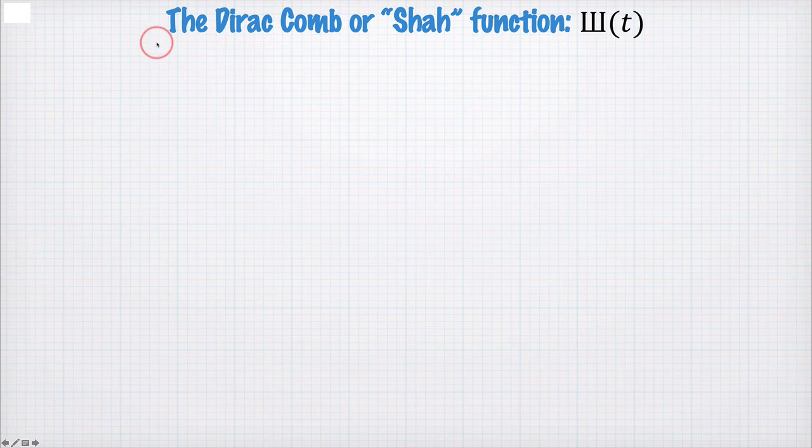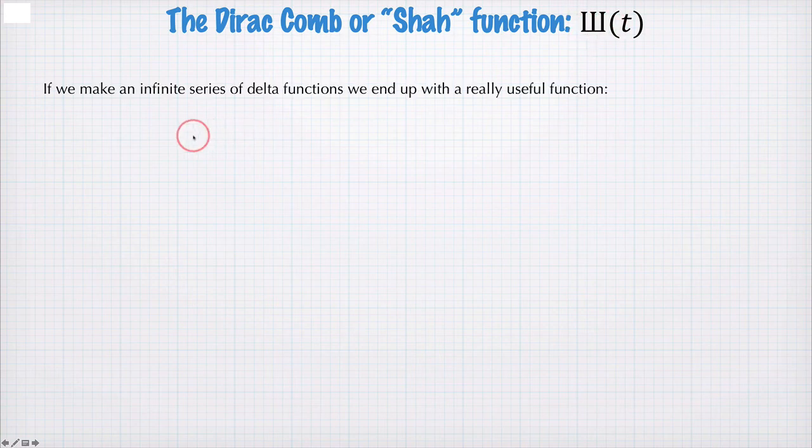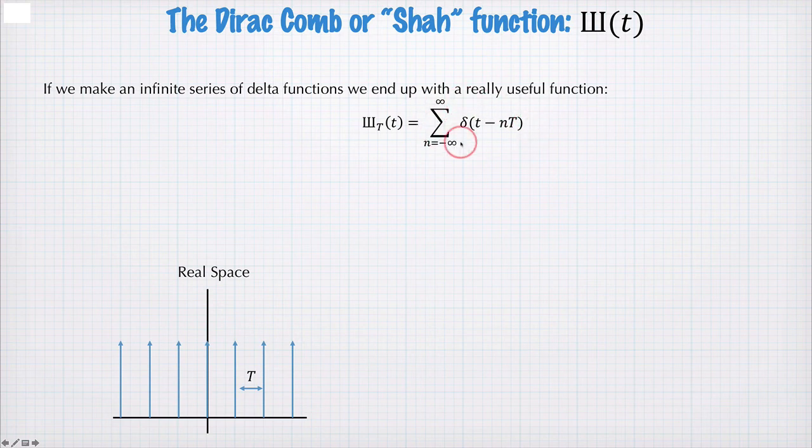Another interesting function we can construct using delta functions is a so-called Dirac comb, or SHA function. And we use this symbol here, the SHA symbol. And this is an infinite series of delta functions that looks like this. So it's a sum of delta functions, all uniformly spaced. In this case, I've written it in the time domain with spacing capital T for the period between the spikes.